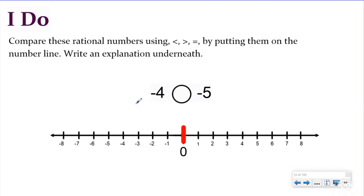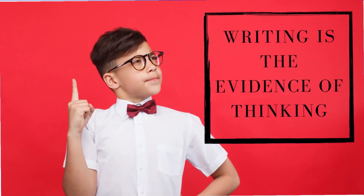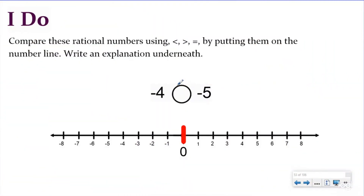Let's look at an I Do problem. It says compare these rational numbers using less than, greater than, or equal to by putting them on the number line, then write an explanation beneath. I have negative four, so I move four units to the left of zero — negative four is right here. Then I have negative five, so I move five units to the left of zero, and that's right here. I can see that negative five is less than negative four.